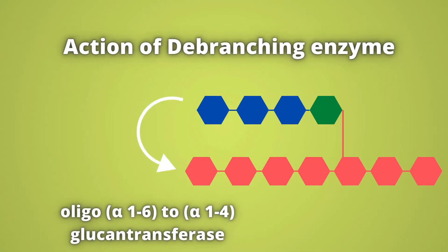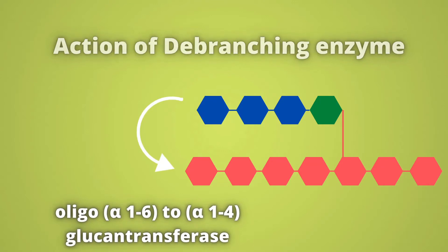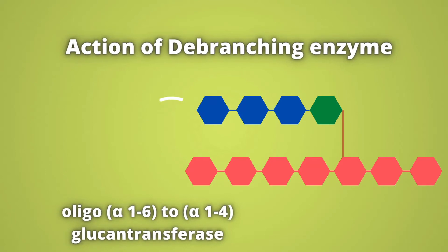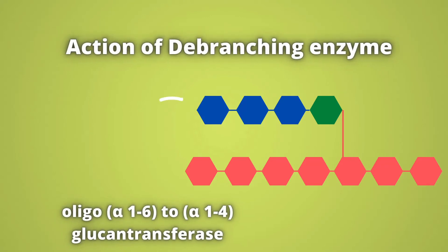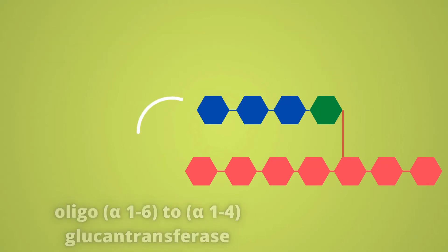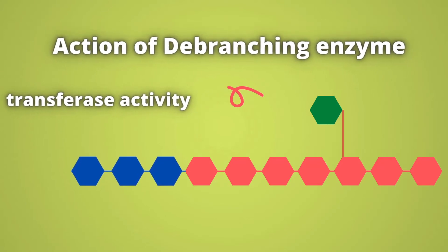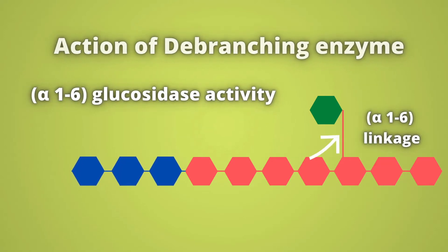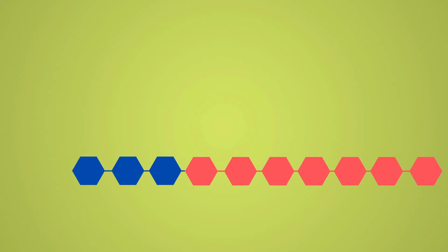After glycogen phosphorylase breaks down glycogen into limit dextrin, another enzyme takes over to continue the breakdown — the debranching enzyme, or oligo-alpha-1,6-to-alpha-1,4-glucan transferase. This enzyme catalyzes two successive reactions. First, the transferase activity shifts three glucose residues from the branch to a nearby non-reducing end of the main branch, forming a new alpha 1,4 linkage.